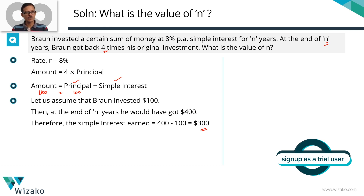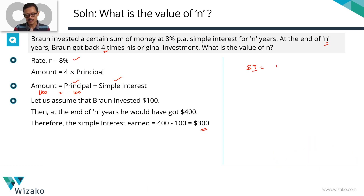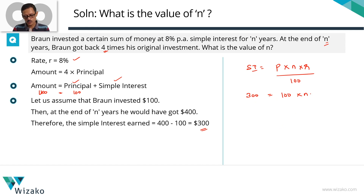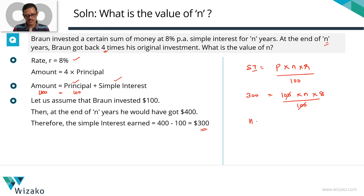All that is left is to plug in these values — eight percent, $100, and $300 — into the simple interest formula. Simple interest equals principle times the number of years times rate of interest per annum divided by 100. The simple interest we got is $300. Our assumption for principle is $100. Number of years n is what we are trying to compute. Rate of interest is eight, divided by 100. The 100 gets cancelled with 100, so eight n equals 300.